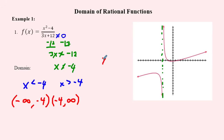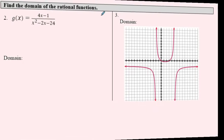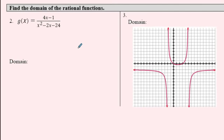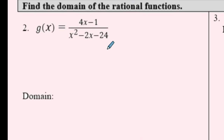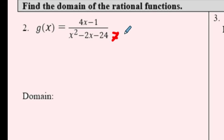You could also say all real numbers where x doesn't equal negative 4 — that's totally valid and the same thing. Now let's look at g of x without a graph. The same rule applies: I can't divide by zero, so I need to solve the denominator equal to zero. Here I've got a quadratic, so I'm going to factor it.